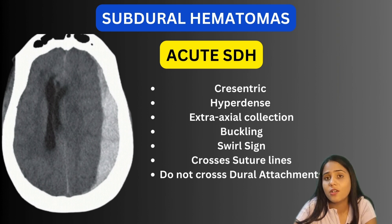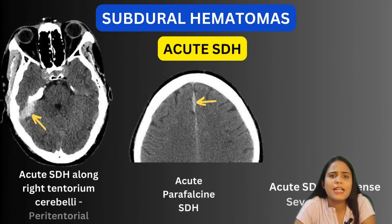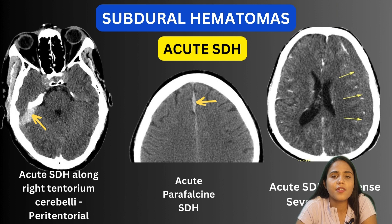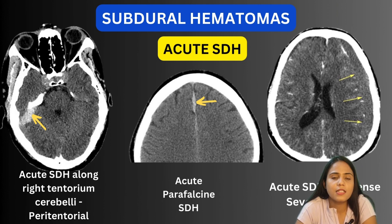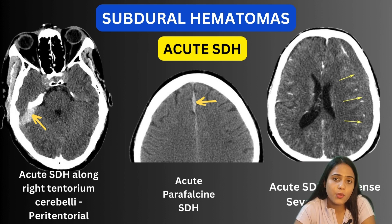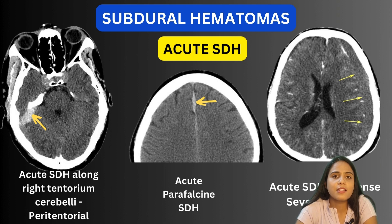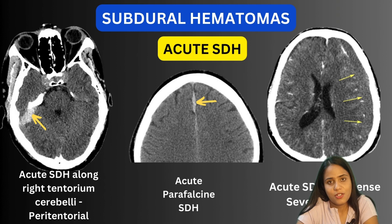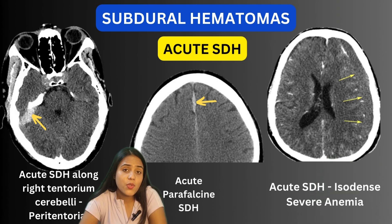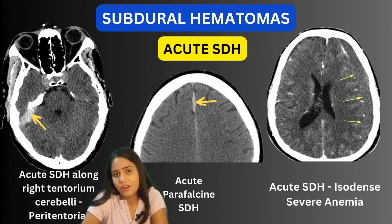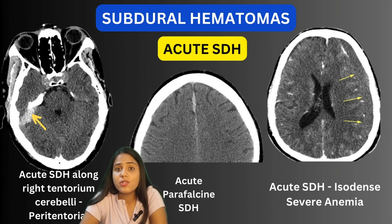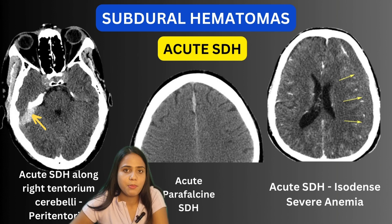Subdural hematomas can be acute, subacute, and chronic. Looking at morphological variants of acute SDH: the first image shows a linear hyperdense collection along the right tentorium cerebelli — an acute peritentorial SDH. The second shows a hyperdense collection in the anterior falx — an acute parafalcine SDH. The third shows an isodense crescent-shaped extra-axial collection along the left lateral convexity; an isodense collection in an acute SDH can be seen in patients with severe anemia.